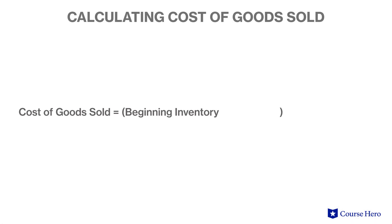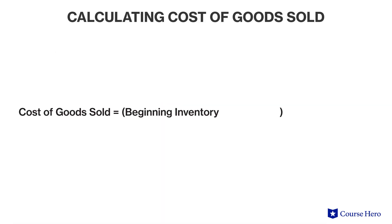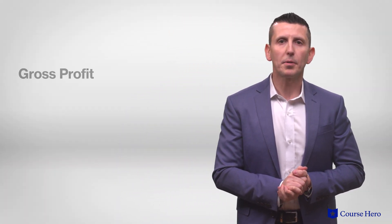The basic formula to calculate cost of goods sold is: beginning inventory plus purchases minus ending inventory equals cost of goods sold. The portion in parenthesis tells us how many units were available in inventory between beginning inventory and additional purchases made during the period. Ending inventory represents whatever has not yet been sold. Therefore, the difference between that portion and ending inventory yields the cost of goods that were sold.